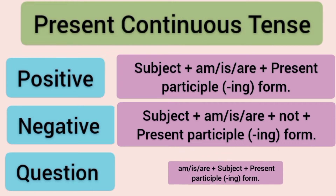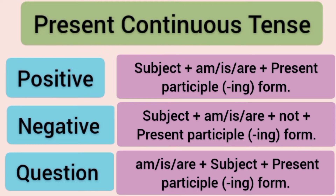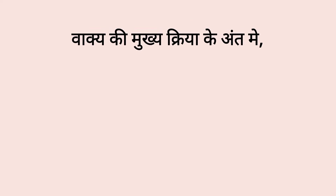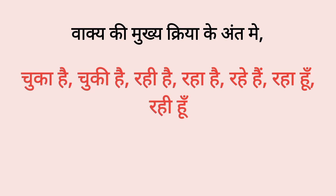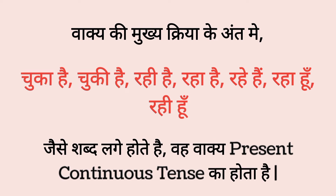Question sentence me: am, is, are plus subject plus present participle — means verb ka ing form hota hai. Vaakya ki mukhe kriya ke ant me chuka hai, chuki hai, rahi hai, raha hai, raha hoon, rahi hoon jaise shabd laghe hote hai — vah vaakya present continuous tense ka hota hai.